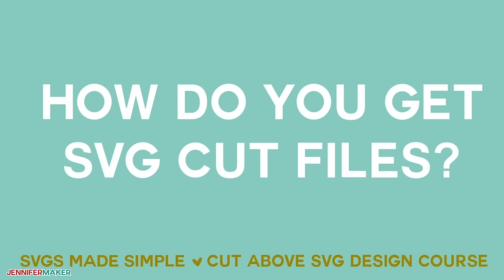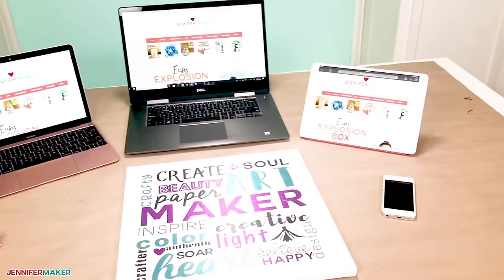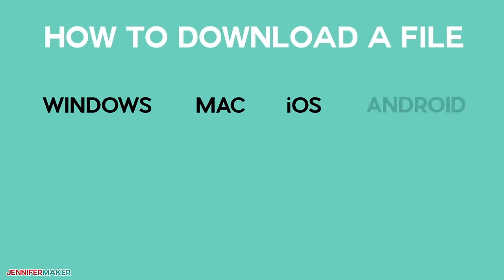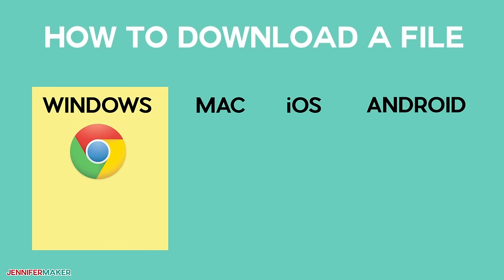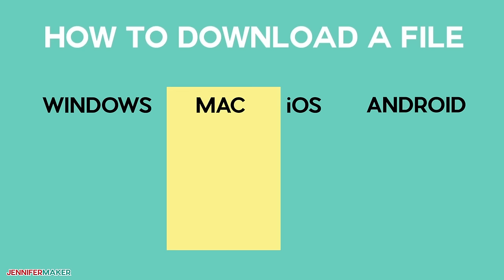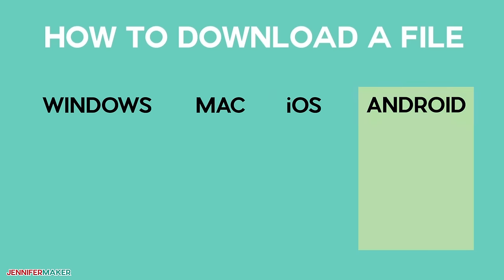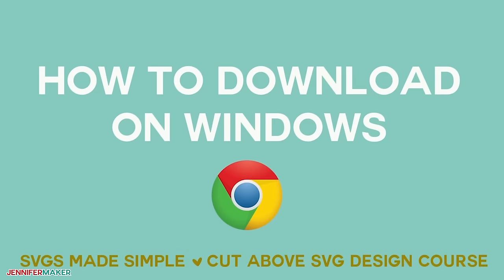So how do you get cut files? Now we get to the trickier part — the one I get a lot of questions about — because it's not always obvious if you haven't done it before. Once you've done it, you'll be golden. So just how do you get SVG cut files from online into your design software? The first thing you need to do is download the files. Let me show you how to download a file from my library on four different devices: Windows, Mac, iPhone or iPad, and Android. We'll cover Windows with Chrome and Microsoft Edge, Mac with Chrome and Safari, iPad with Safari, and Android with Chrome. Let's start with Google Chrome on a Windows computer, which is the most common scenario and the one I recommend if you're on Windows.